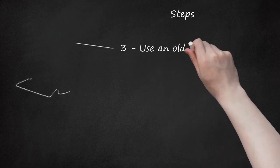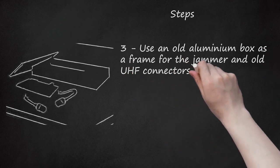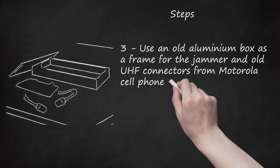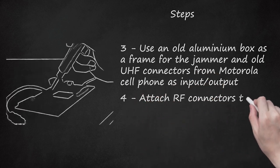3. Use an old aluminum box as a frame for the jammer and old UHF connectors from Motorola cell phone as input-output. 4. Attach RF connectors to the circuit.